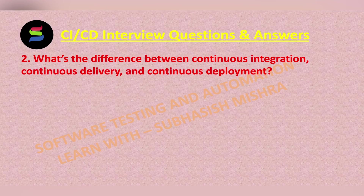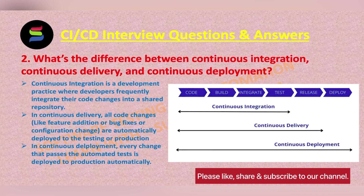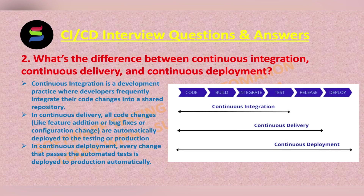What is the difference between continuous integration, continuous delivery, and continuous deployment? Continuous integration is a development practice where developers frequently integrate their code changes into a shared repository. This integration occurs multiple times in a day from multiple developers. After code integration, it is validated through automated tests and a build procedure. This approach helps in resolving integration challenges and rectifying bugs early in the development cycle and iteratively testing and refining the code.